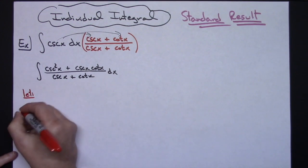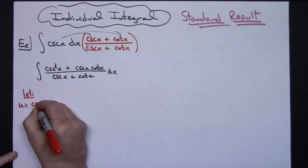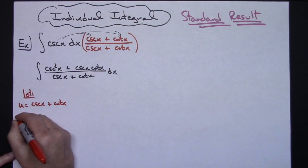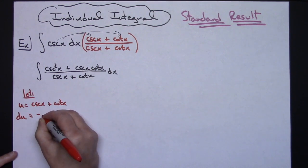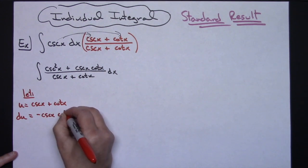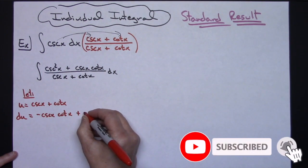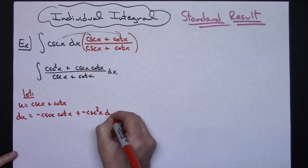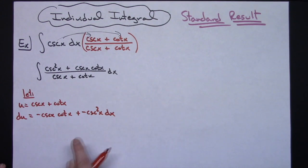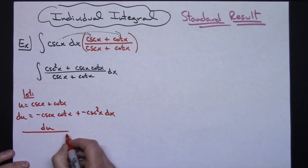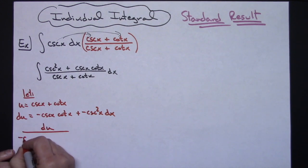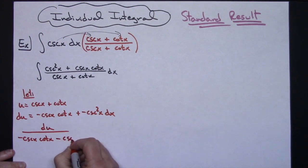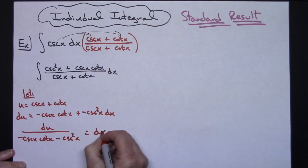We are going to let u equal cosecant x plus cotangent x. Taking the derivative of both sides, du equals negative cosecant x cotangent x minus cosecant squared x dx. Solving for dx, I'll have du over negative cosecant x cotangent x minus cosecant squared x equaling dx.